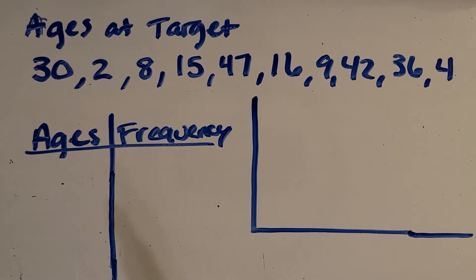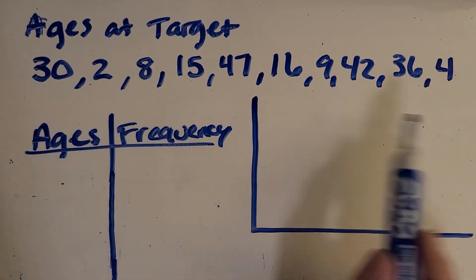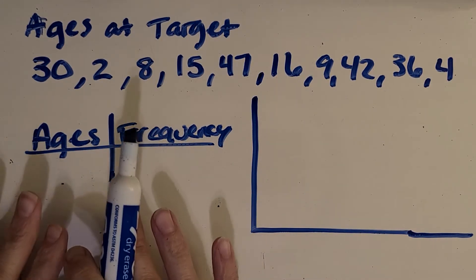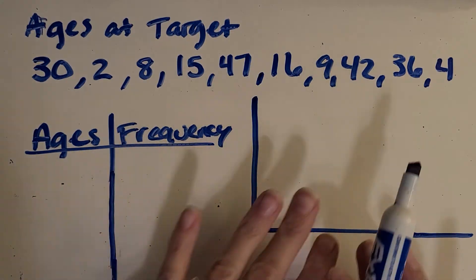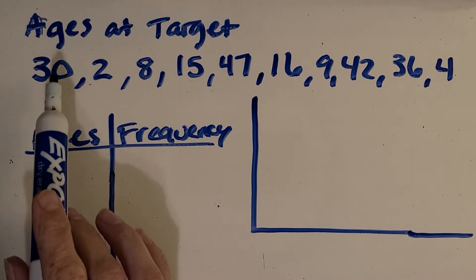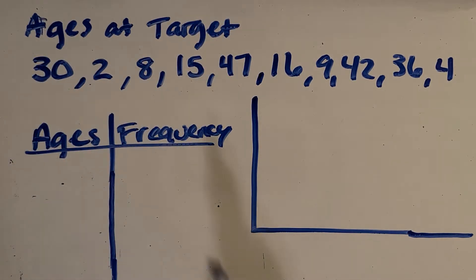I wanted you to see an example where I give you some random data that's not organized yet so that we can organize it into a frequency table and then into a histogram. So this is just data that I collected my last trip to Target. I saw these ages of people.